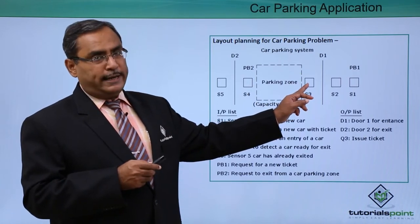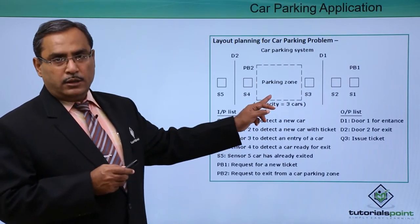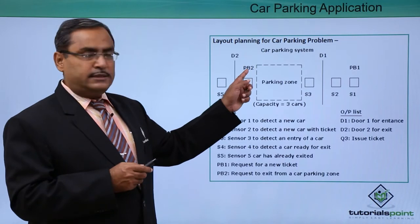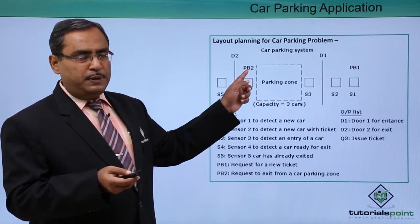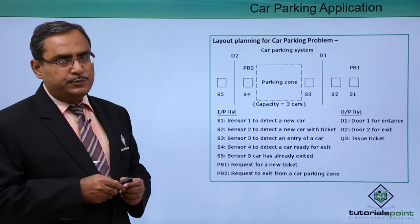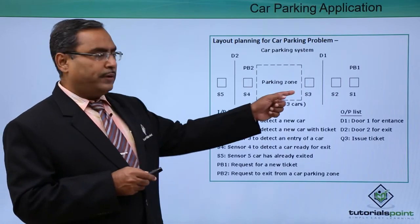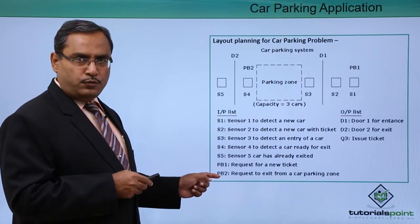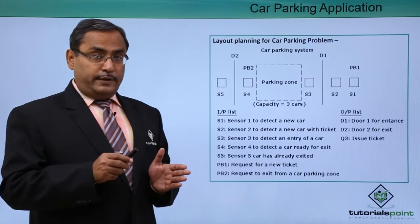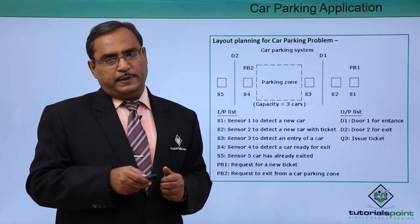At this point the counter will get increased by 1 and the entry barrier will get closed. The car will be parked in the parking zone. When any parked car moves to S4 and presses exit push button PB2, the barrier opens and the car moves to S5, the barrier closes and the counter decrements by 1. Here we have mapped sensors S1, S2, S3, S4, S5 to their purposes, and PB1 and PB2 for issue ticket and exit door request. Let us get them mapped with respective inputs and outputs.